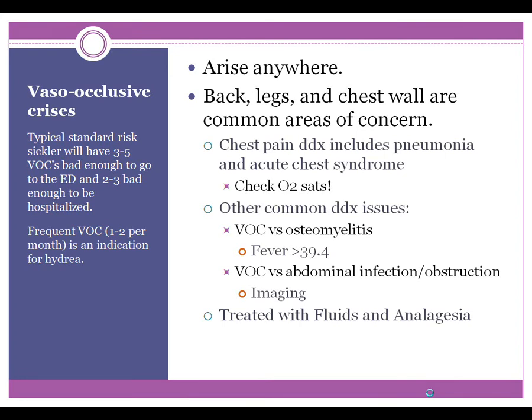A couple of things to remember is that pain crises can arise anywhere in the body, but pain in the back, legs, or chest are common areas of concern. Chest pain differential diagnosis always has to include pneumonia and acute chest syndrome, and nobody will ever fault you for ordering a chest x-ray to rule out either one of those, especially in a kid whose O2 sats are borderline. Remember, 93 is the low end of normal — below that, they've got to be worked up.